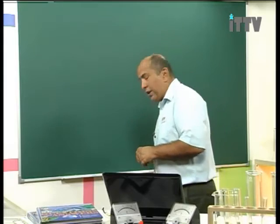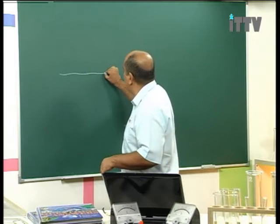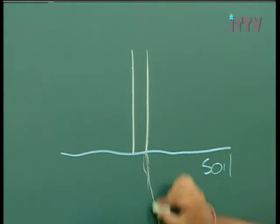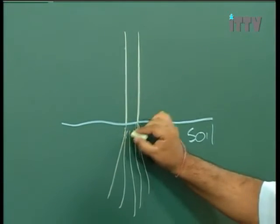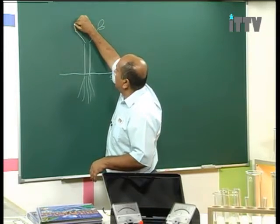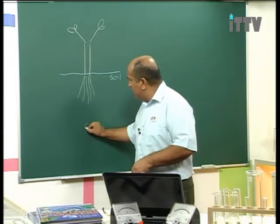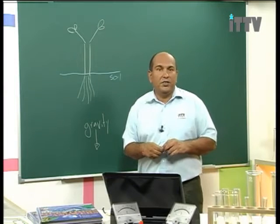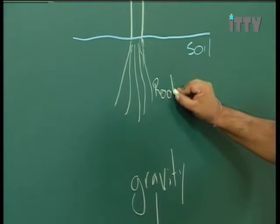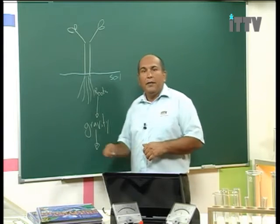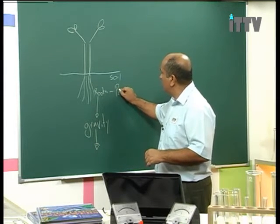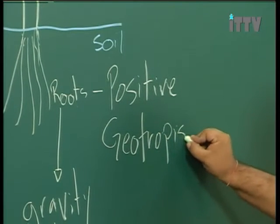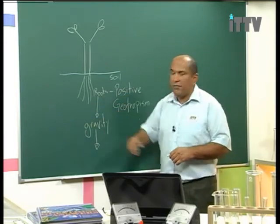Let's do a quick diagram on the board. If we have soil with a tree in it, the tree has its root system down below and branches above. Gravity is downwards. The roots move towards gravity — therefore, the roots are exhibiting positive geotropism. The roots growing towards gravity show positive geotropism.